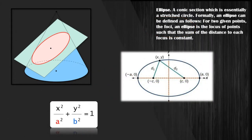Okay, here in the figure, we see an ellipse. An ellipse is defined as a conic section, which is essentially a stretched circle. Formally, an ellipse can be defined as follows. For two given points, the foci, an ellipse is the locus of points such that the sum of the distance to each focus is constant. What this is basically saying is that for any xy points on the ellipse, d1 and d2 will be constant and will be equal throughout.